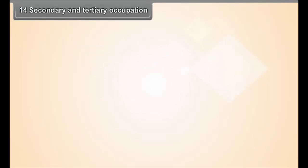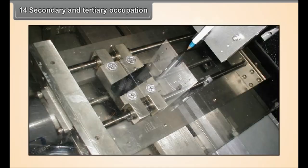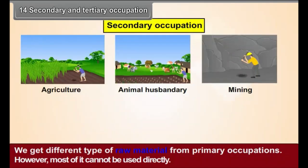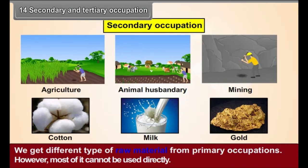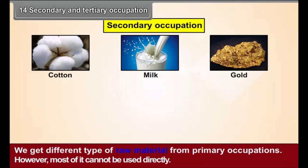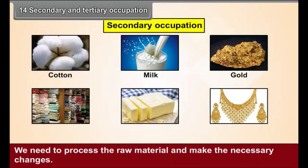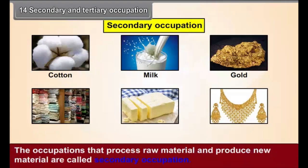Chapter 14: Secondary and Tertiary Occupations. We get different types of raw material from primary occupations. However, most of it cannot be used directly. We need to process the raw material and make the necessary changes. The occupations that process raw materials and produce new materials are called secondary occupations.